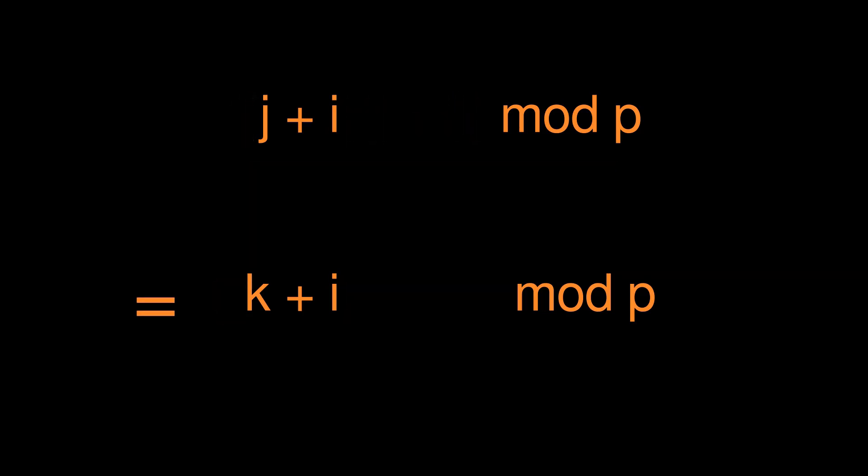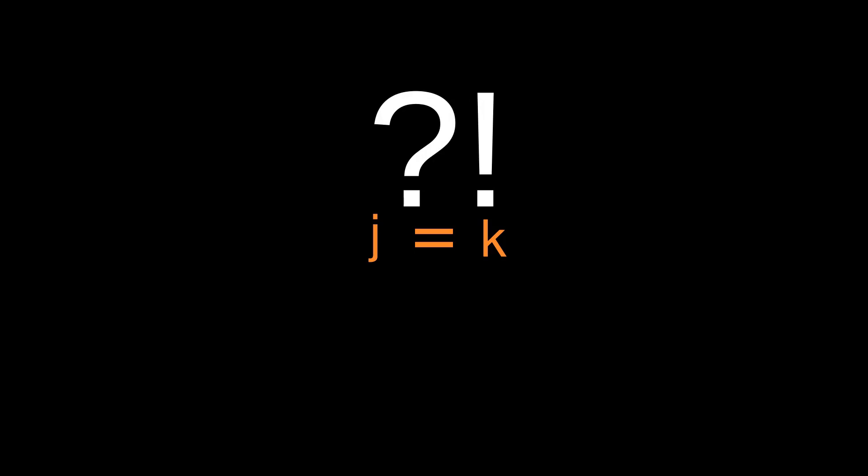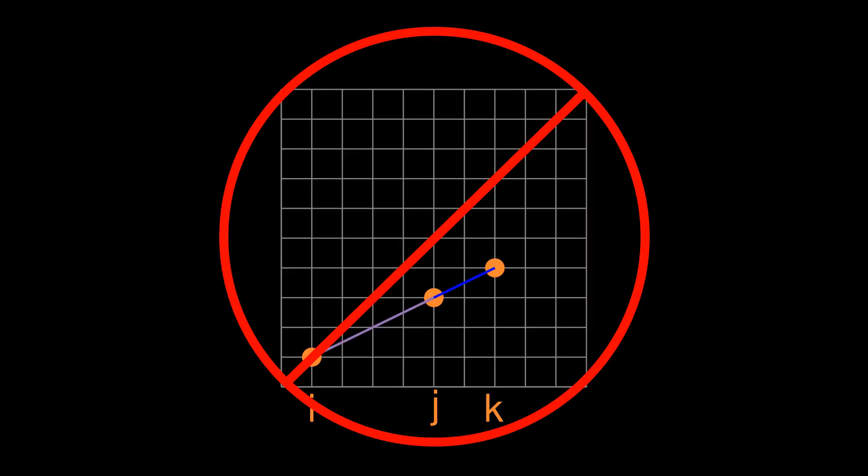Now we subtract i from both sides and arrive at j equals k. But we originally assumed that i, j, and k were all distinct. So, we've arrived at a contradiction, meaning no three distinct points from this set lie on the same line. So, Erdős's method always works for a prime-sized grid.